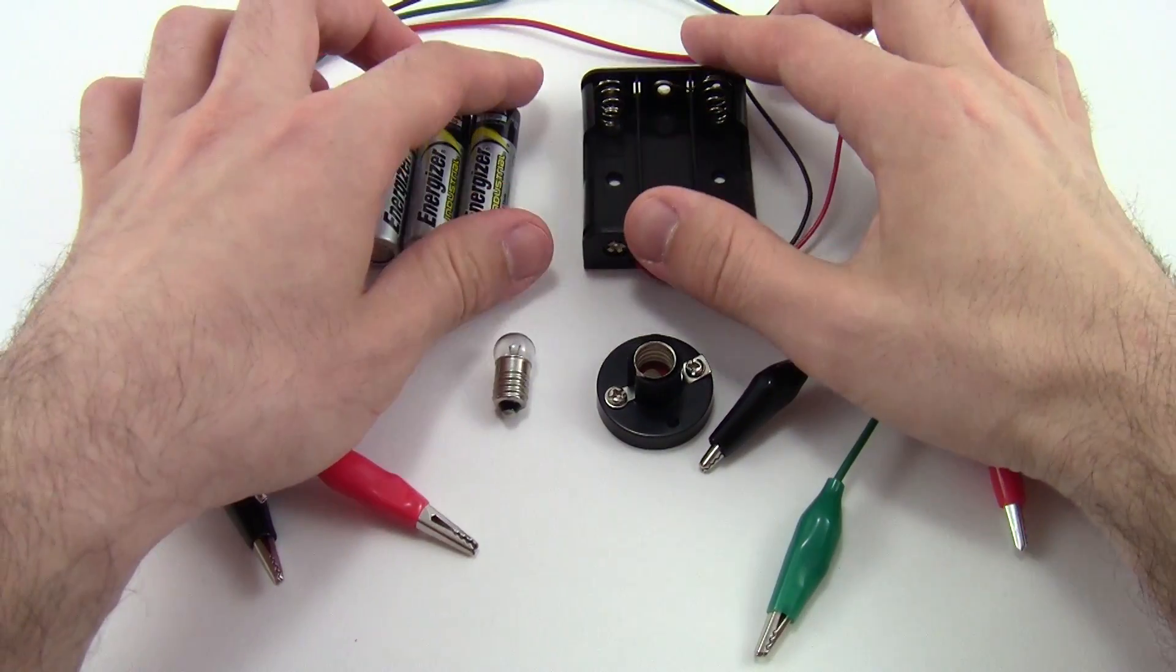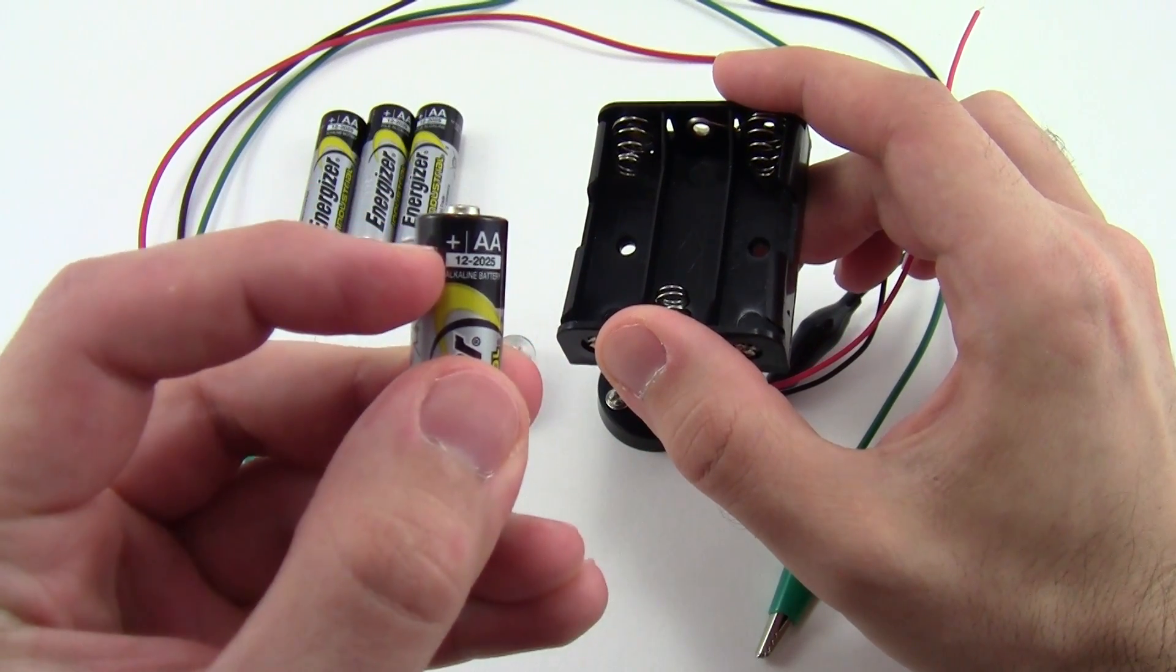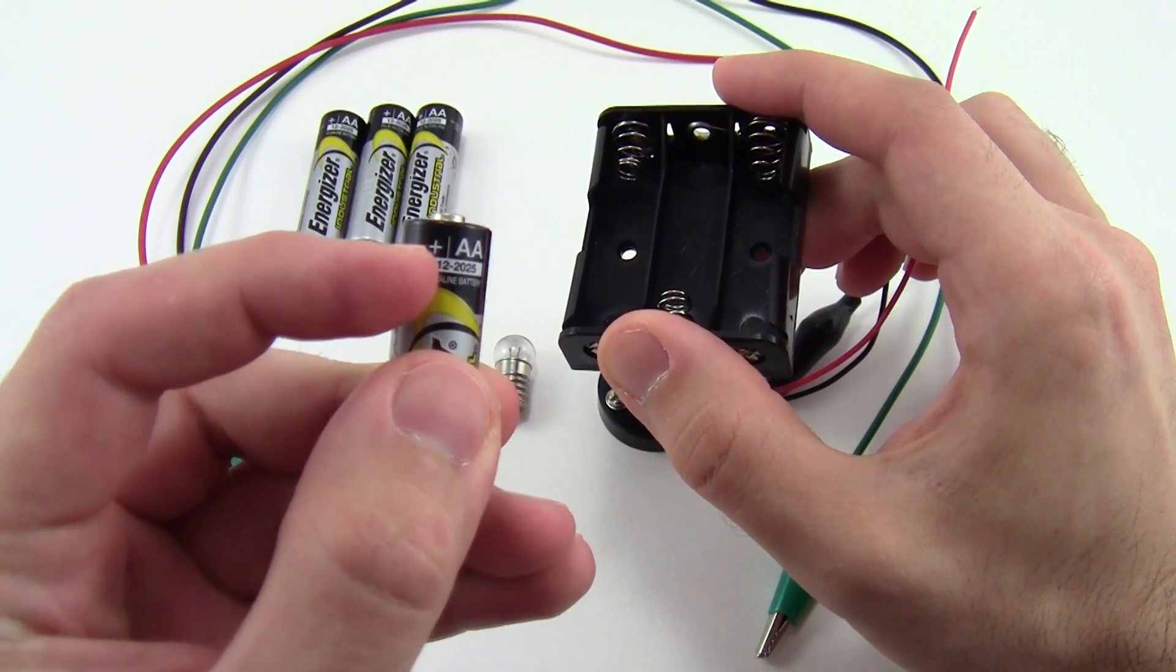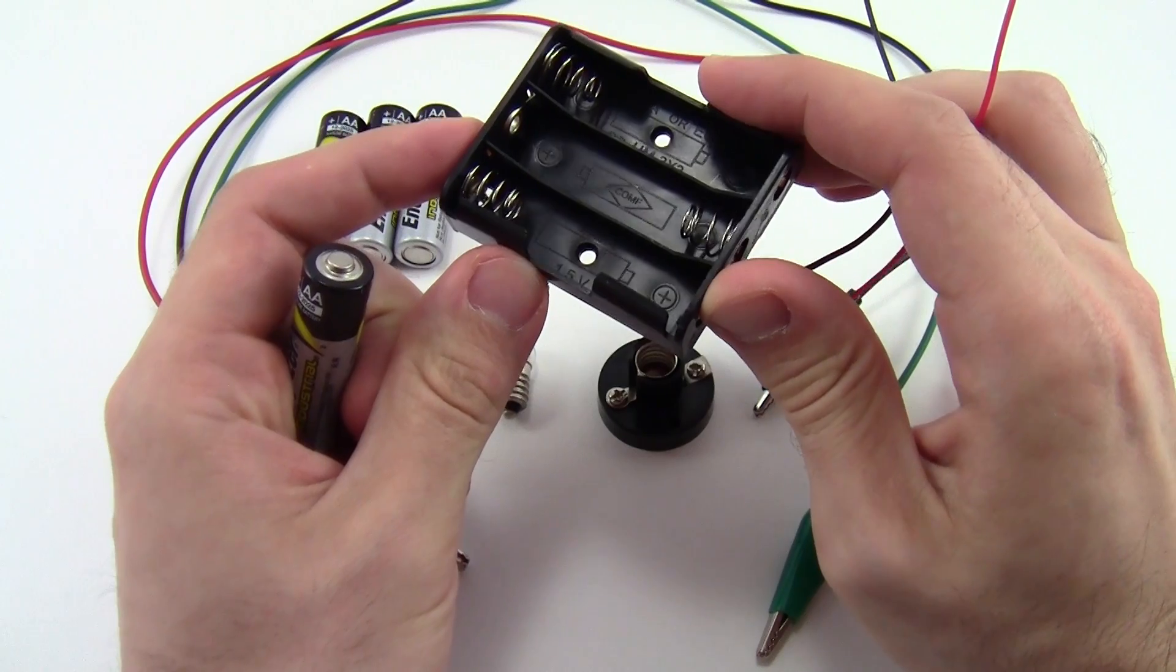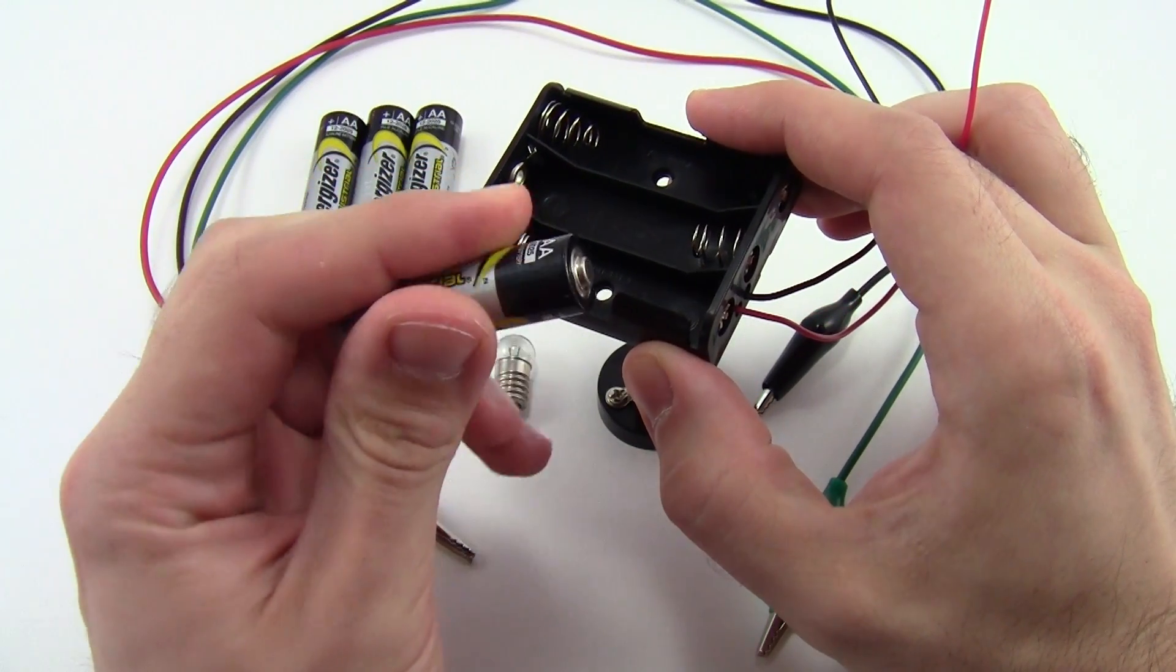To assemble your kit, first you're going to put three batteries in the battery holder. Look closely at the batteries. You see that there are plus signs on one end of the batteries, and there are also plus signs printed inside the battery holder. Make sure those plus signs line up.